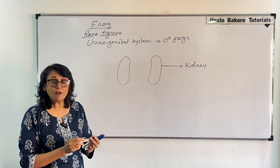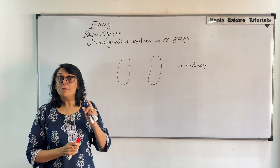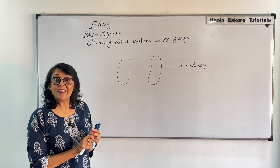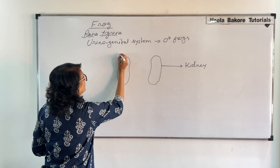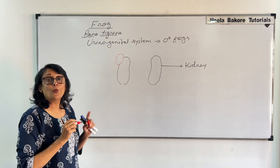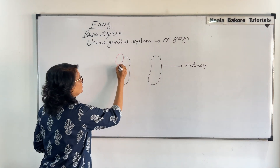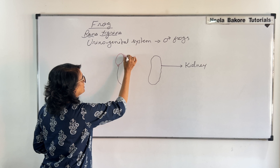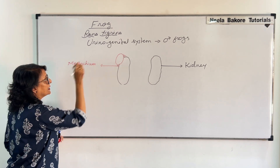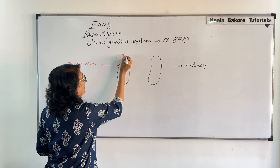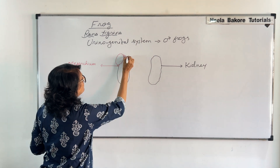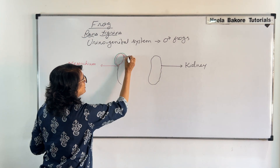In case of male frog, the testes — that is the main reproductive structure or the primary sex organ — they are attached on the kidney. They are attached with the help of a mesentery. There are connections, and this mesentery is known as the mesorchium. So there is a membrane which is going to cover it, forming this connection.